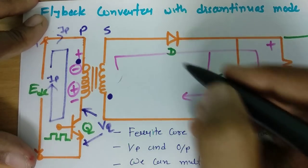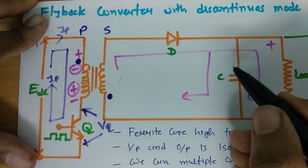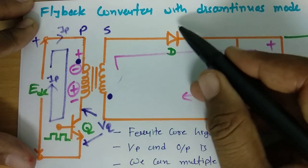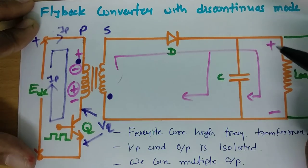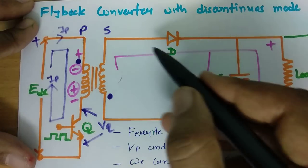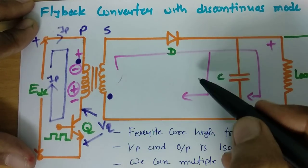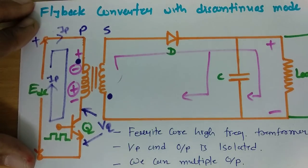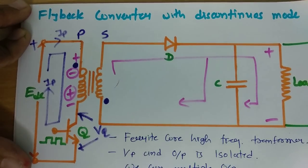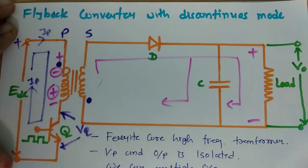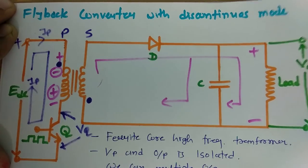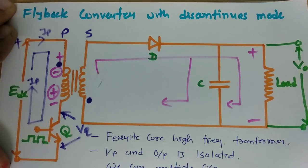To summarize the advantages: we can use slower diodes, smaller transformer size, no additional inductor filter is needed, and it has fast transient response. These are the advantages of discontinuous mode operation with flyback converter. Thank you for watching. You can suggest topics needed to complete the power electronics playlist, and I will upload videos based on your suggestions.